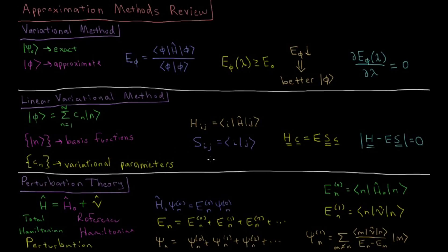And when you derive what is the minimum set of parameters, you get that the Hamiltonian matrix acting on a coefficient vector, so the set of all these C_N for n basis functions, equals the energy times the overlap matrix times the same coefficient vector.